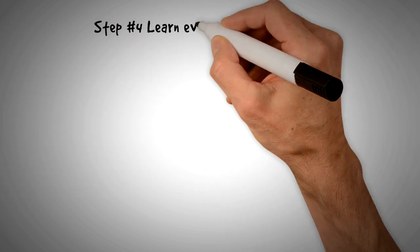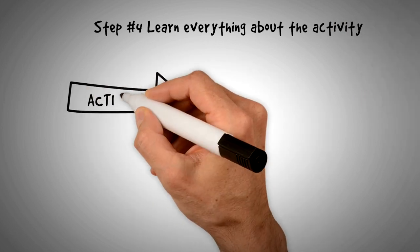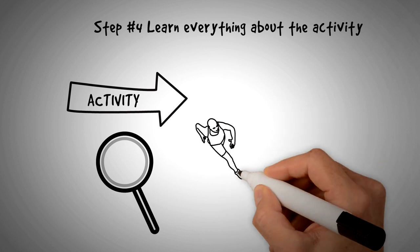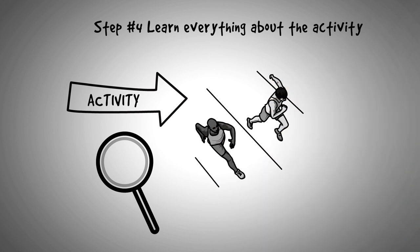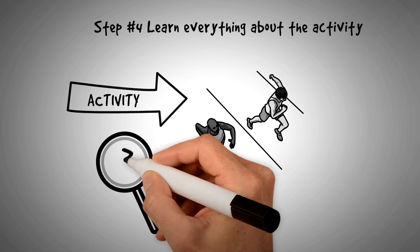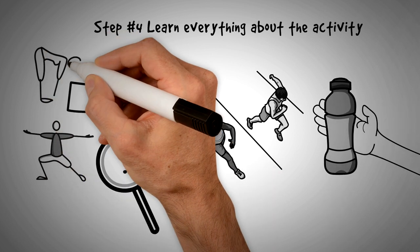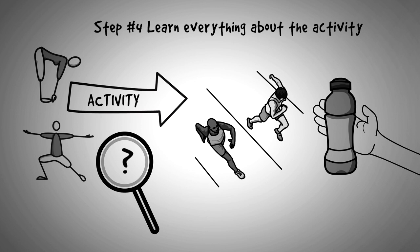Step number four is to learn everything about the activity. Even the most seemingly uncomplicated activity has its little secrets. Running, for instance, seems straightforward, right? But if you want to be a good marathoner, you need to uncover a lot of the finer details. How much water to consume and when, how to stretch and warm up properly, what to wear, what not to wear. The deeper you go into the details, the more immersed you can become.